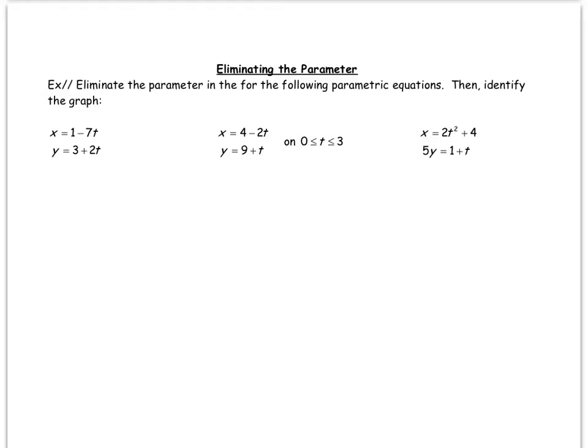In a previous video we looked at eliminating the parameter when you were looking at a circle. In parametric form we know what a circle looks like, and to eliminate the parameter we had to utilize this identity.